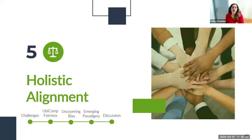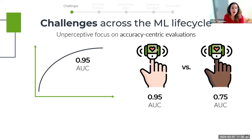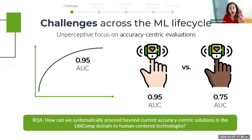Finally, we adopt a more comprehensive viewpoint, touching upon the holistic alignment problem. The development of ubicomp systems has primarily focused on accuracy, both in academic and industrial settings, leading to emergent issues in terms of fairness. If a model performs well in terms of AUC score overall, this does not necessarily mean it performs well for all user cohorts — think of the oximeter use case we discussed in the introduction. Our research question is: how can we systematically proceed beyond current accuracy-centric solutions, focusing on a ubicomp that is fairer and aligns with human needs, values, and expectations?